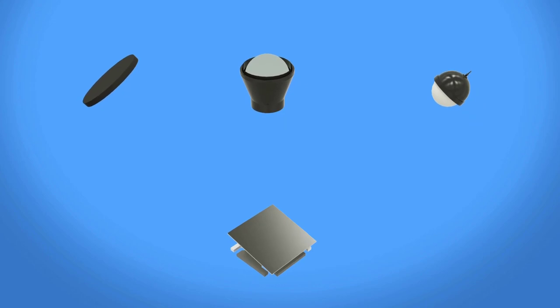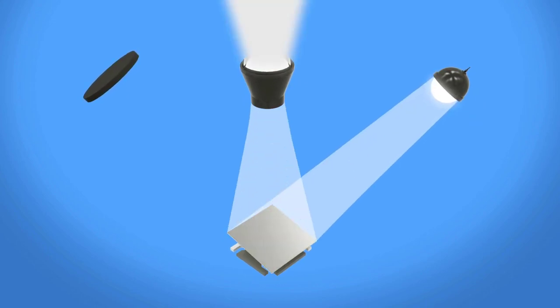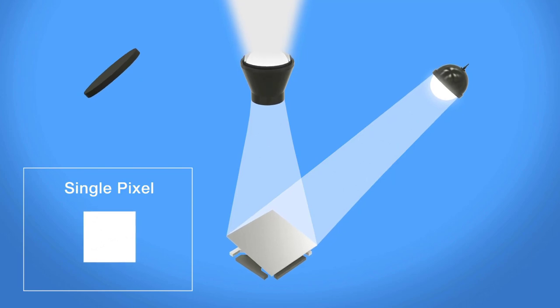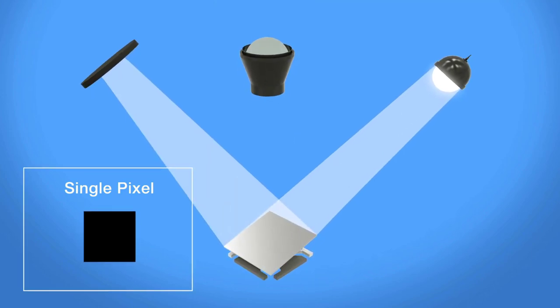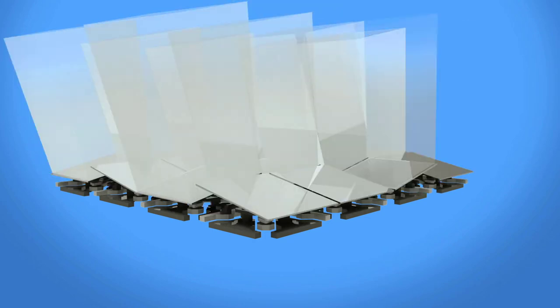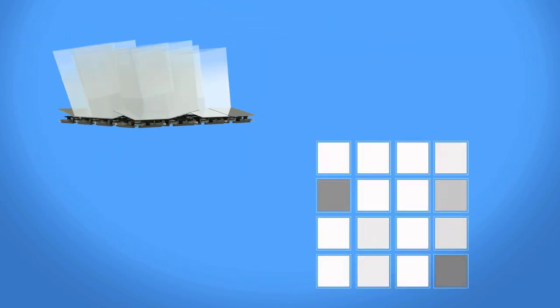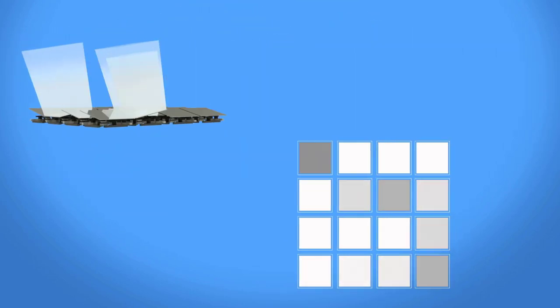As a light source illuminates the DMD, each mirror will either reflect light through the projection optics to display a white pixel, or towards the light absorber to display a black pixel. Grayscale shades are determined by the length of time light is steered towards the projection path during each frame.